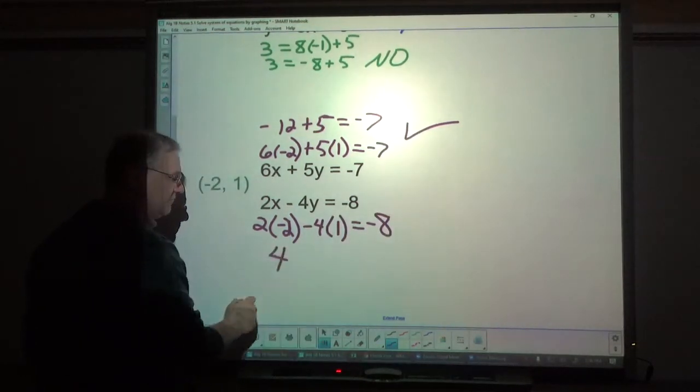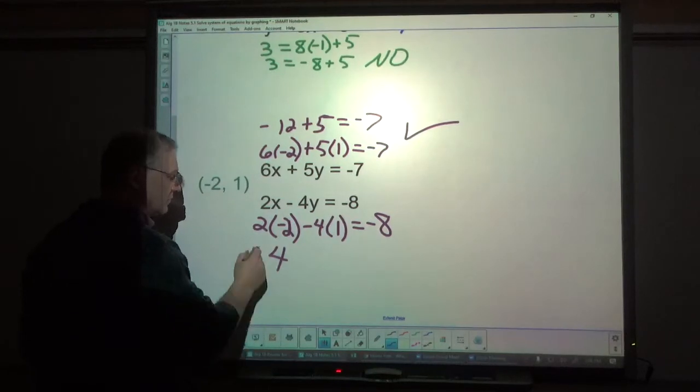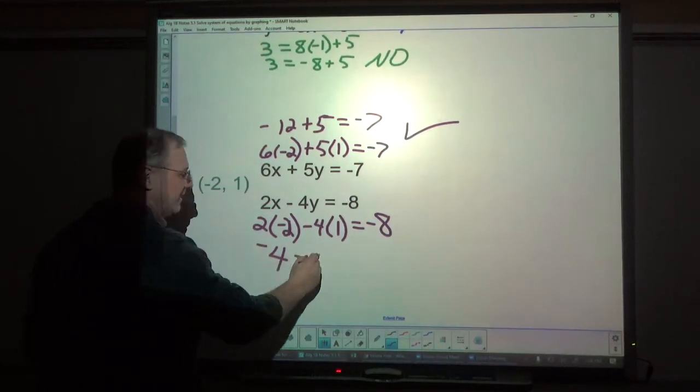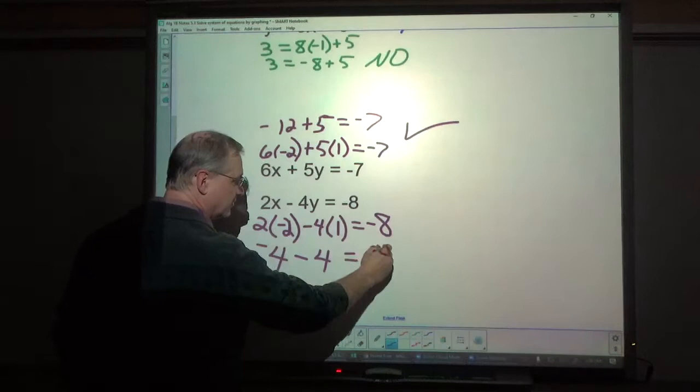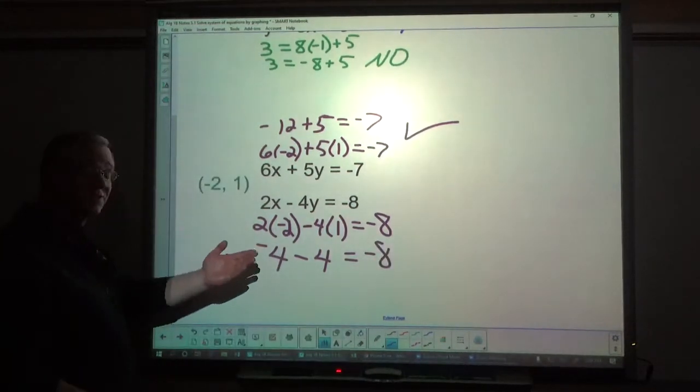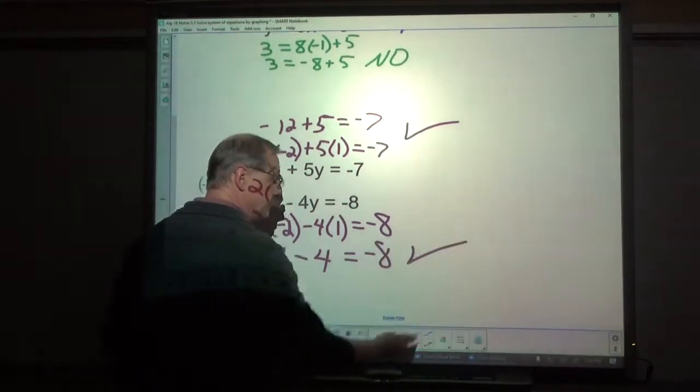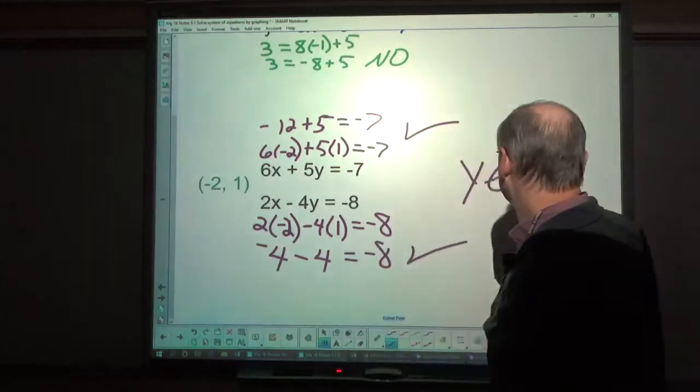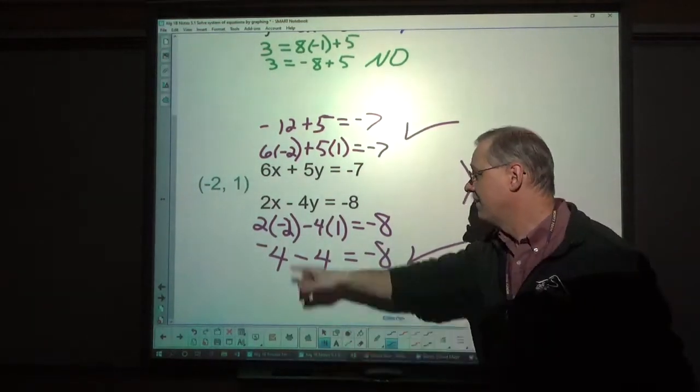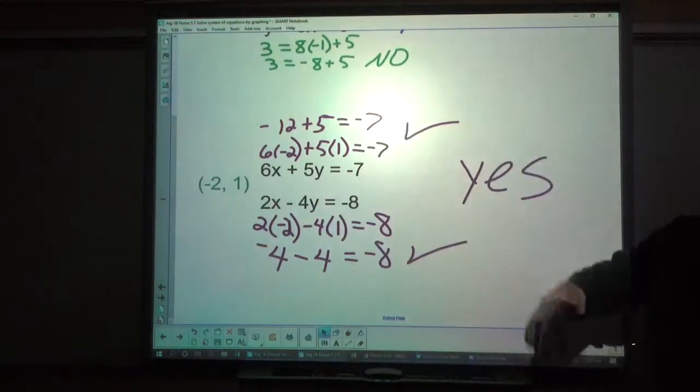Let's try it on the bottom. 2 times negative 2 minus 4 times 1. Well this is negative 4. Negative 4 minus 4 does equal negative 8. So this is yes, that is the solution. The top one was not.